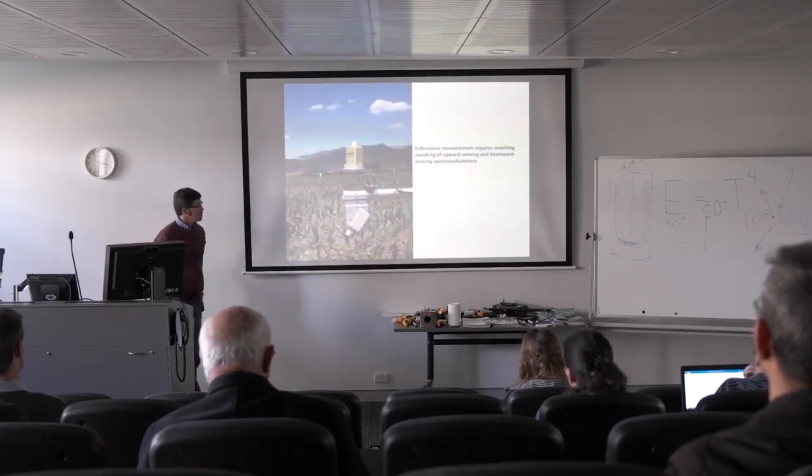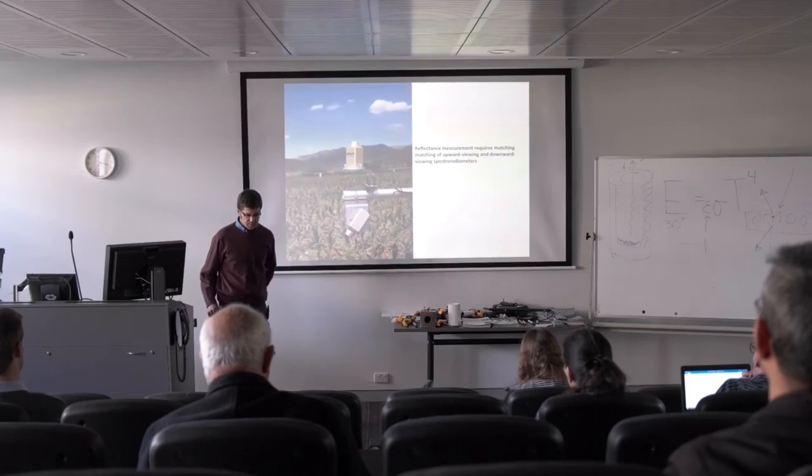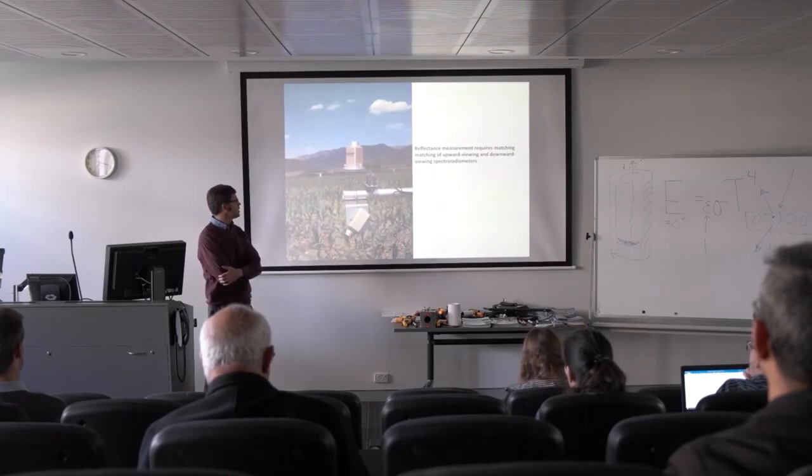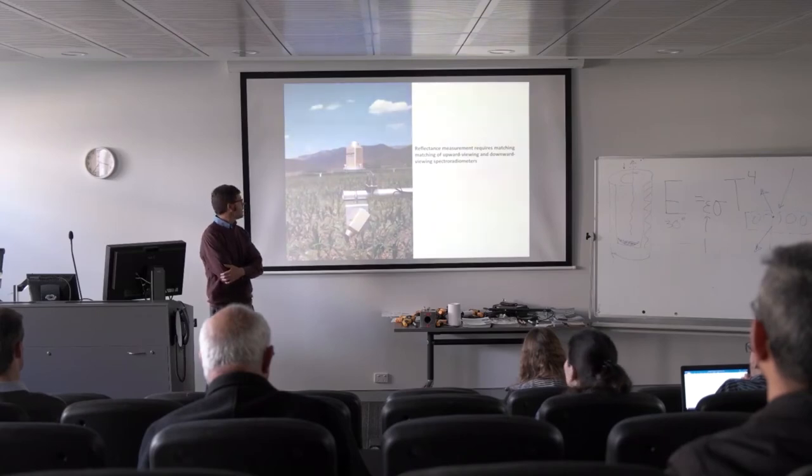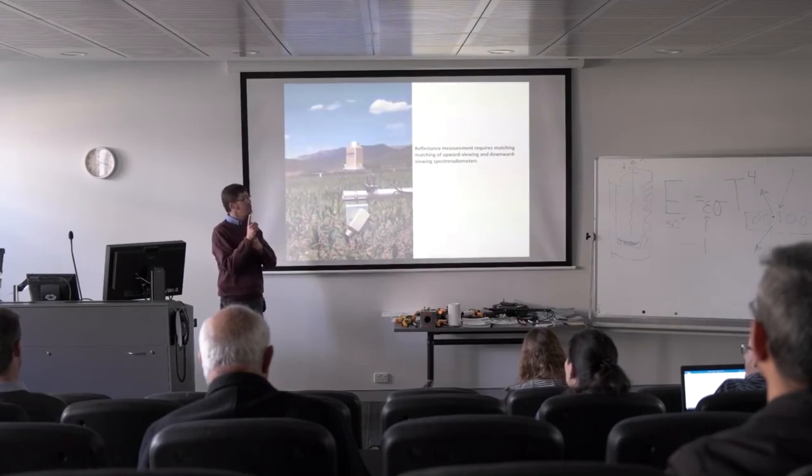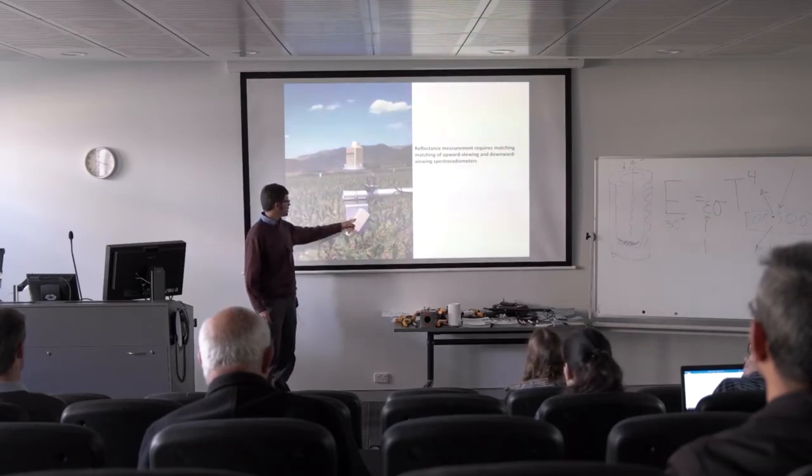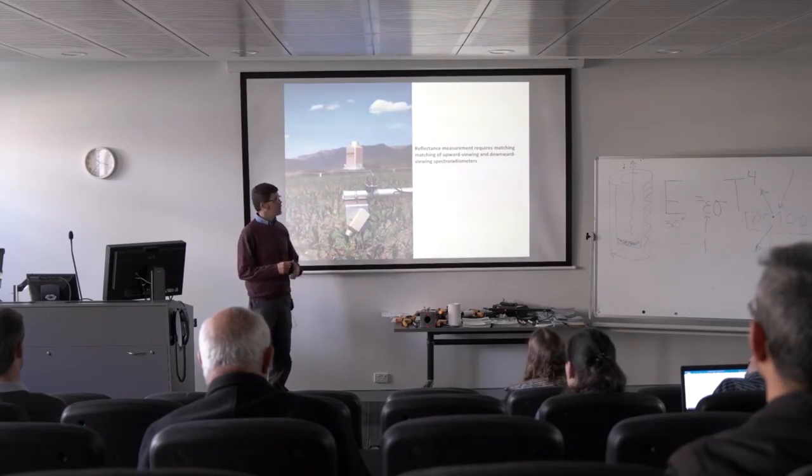I said a few minutes ago when I was explaining how to make the reflectance measurement in the lab that the procedure was relatively similar for making measurements in the field. There's a couple of different approaches you can take. One would be to mount one instrument level and looking up, and another instrument pointing down at the plant canopies. This gives you the reflected spectrum. This gives you the incoming spectrum. The ratio of the two is the reflectance measurement.